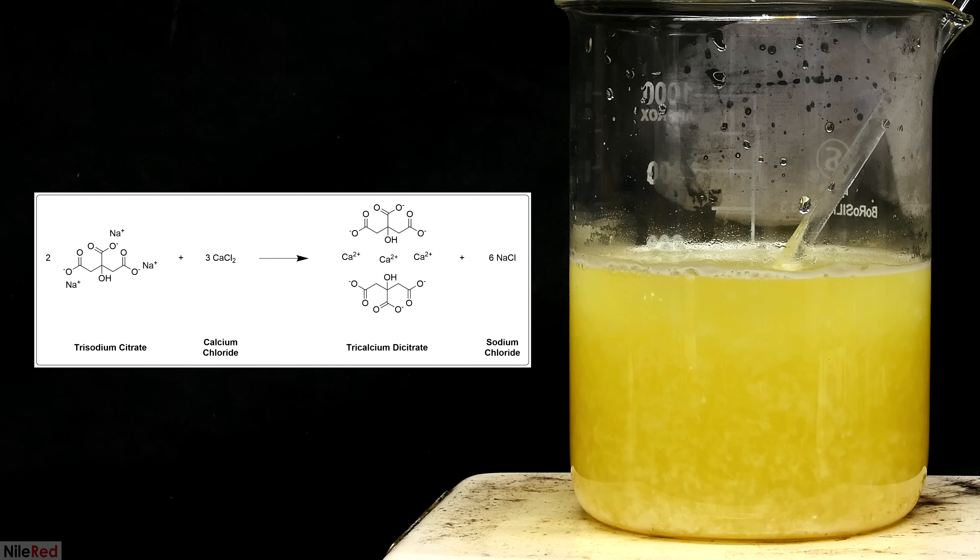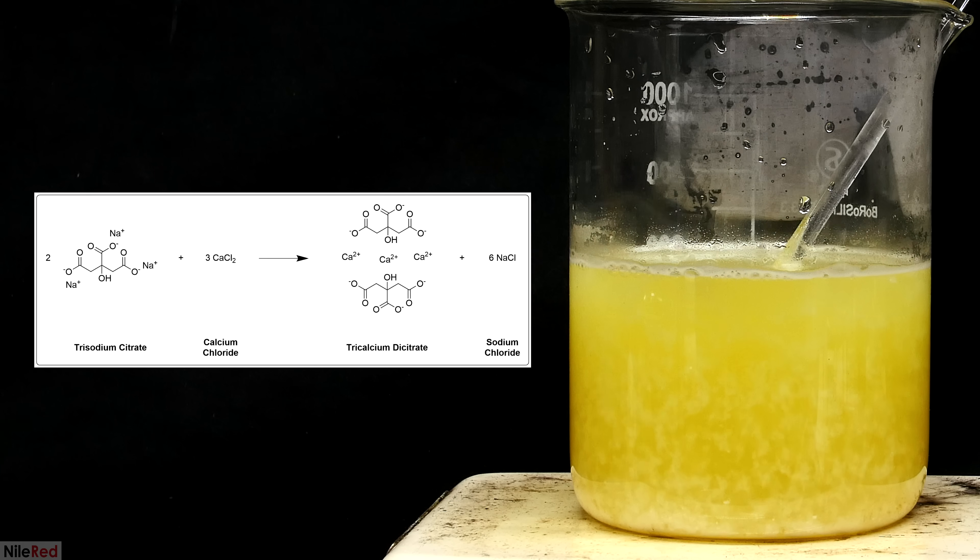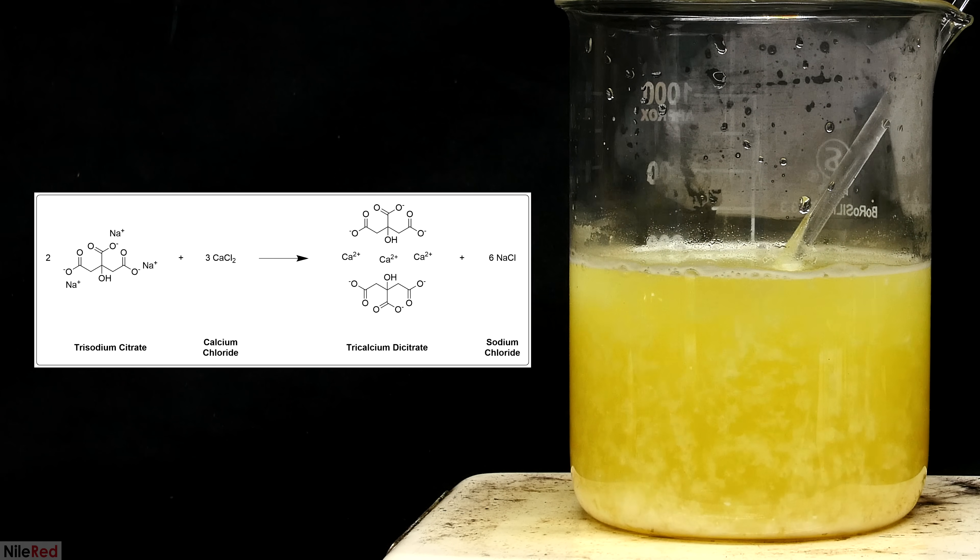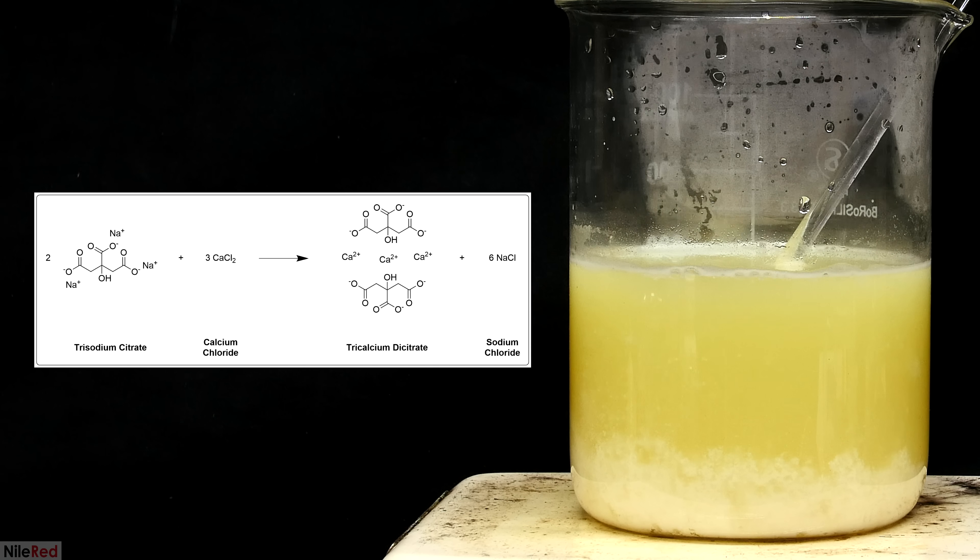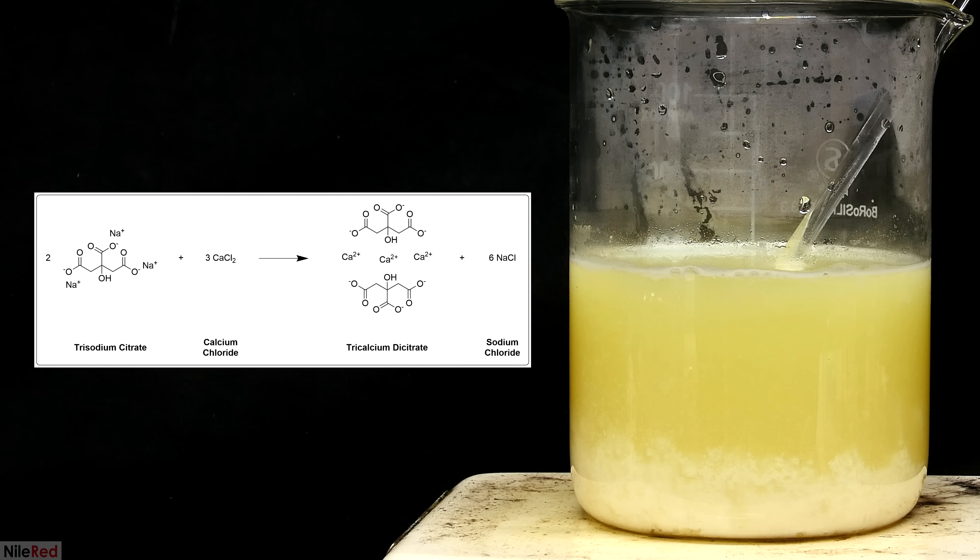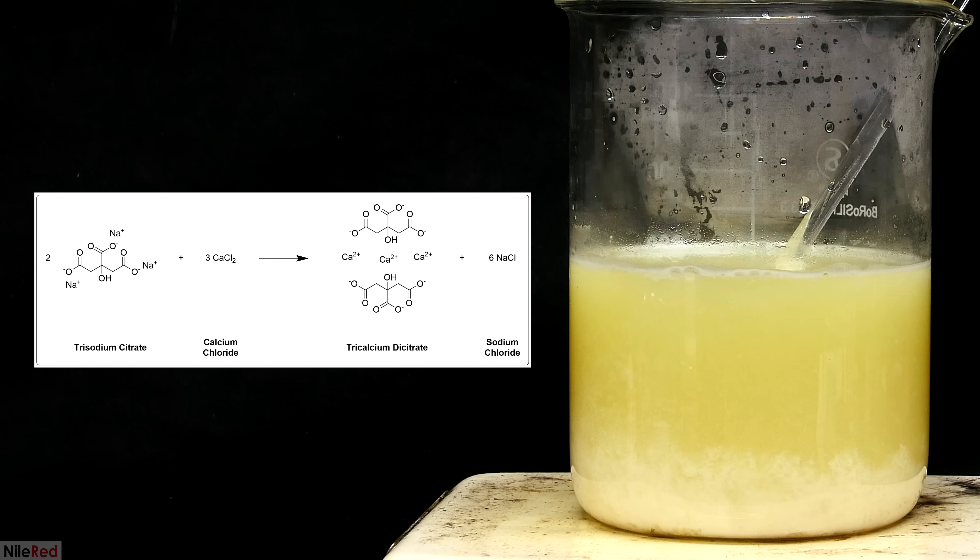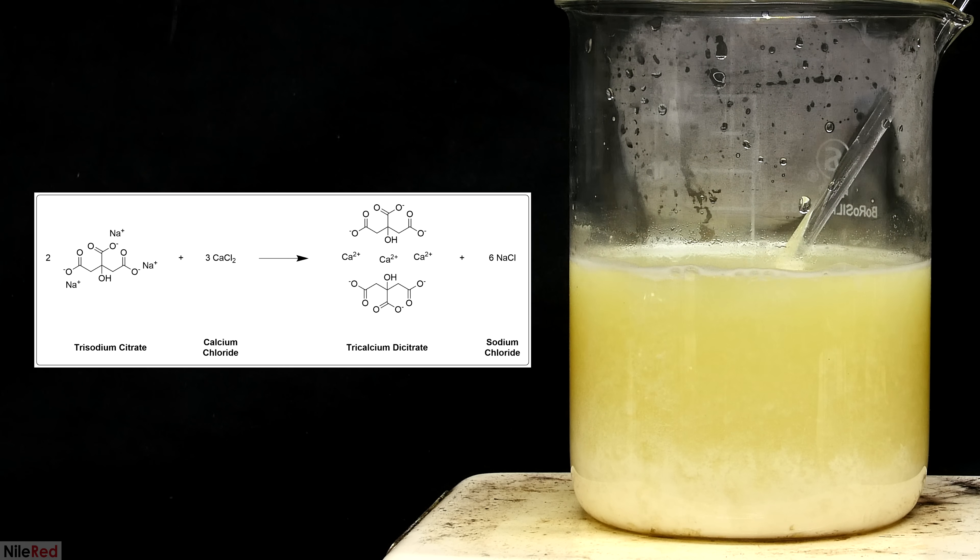The reaction here is a double displacement where the calcium chloride reacts with the trisodium citrate to form tricalcium dicitrate and sodium chloride. This time we have a dicitrate because we need to balance the 2 plus charge of calcium. Sodium chloride is very soluble in water but the tricalcium dicitrate isn't so it precipitates out. To make things easier I'm going to refer to the tricalcium dicitrate as just calcium citrate for the rest of the video.